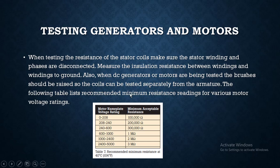The following table lists recommended minimum resistance readings for various motor voltage ratings. This is basically the motor nameplate, and the acceptable ranges of resistance are mentioned here.